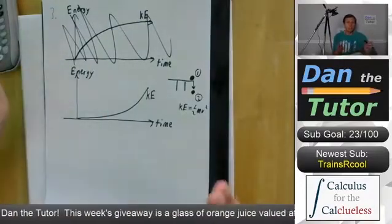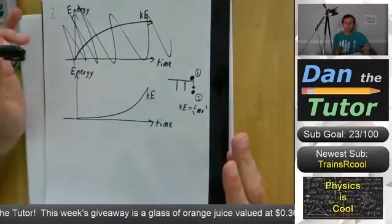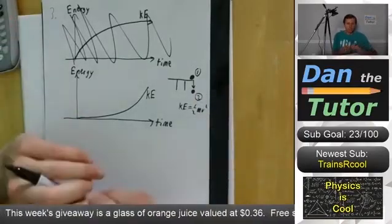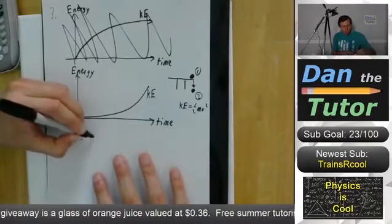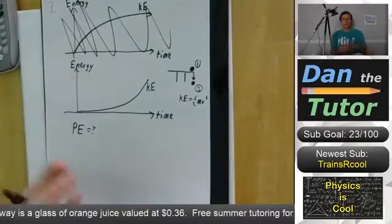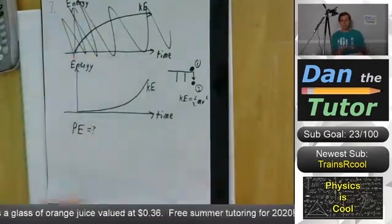So this could be the kinetic energy graph of a ball falling off a table. And then if I were to ask a question, what does the potential energy curve look like if I want to plot it directly on this plot as well?